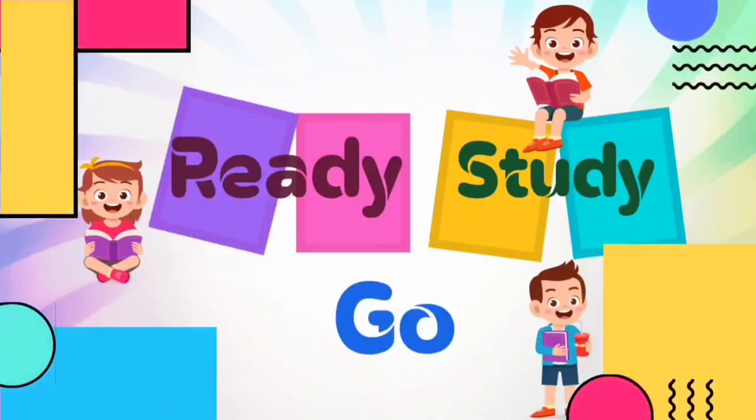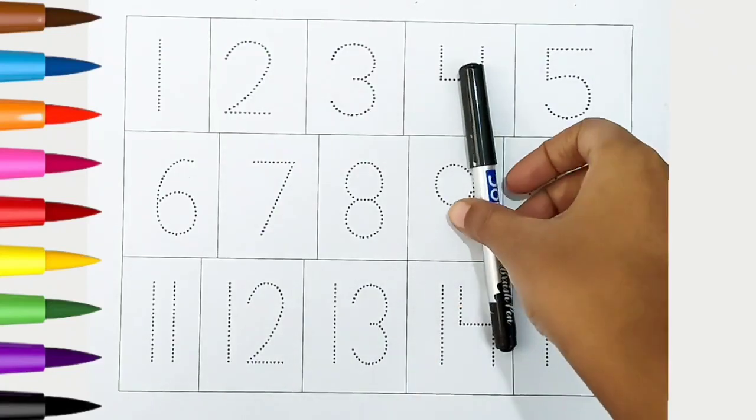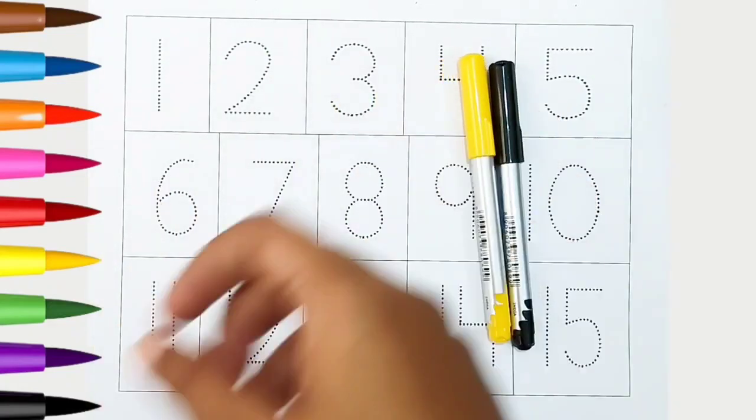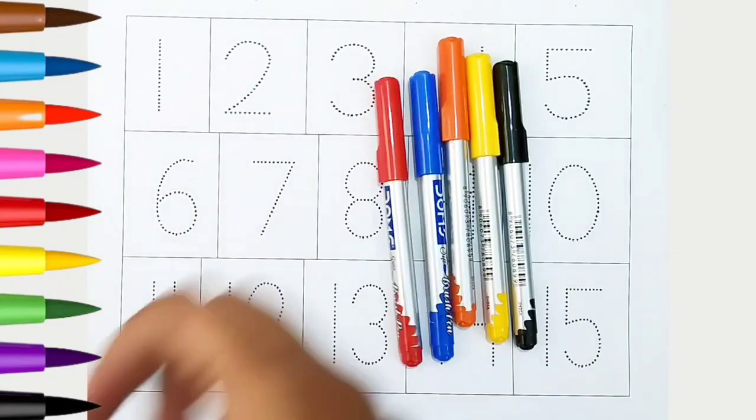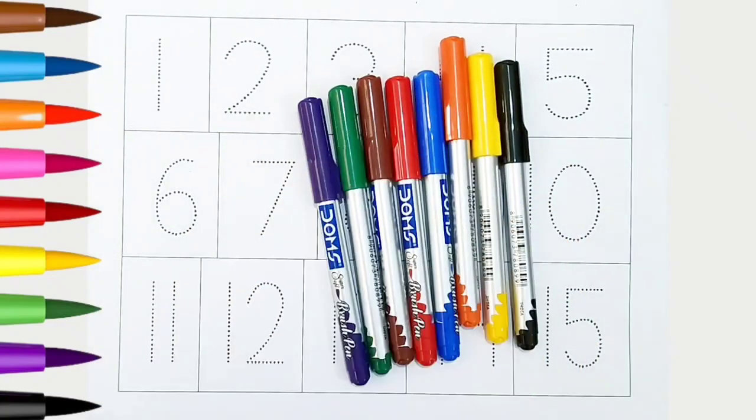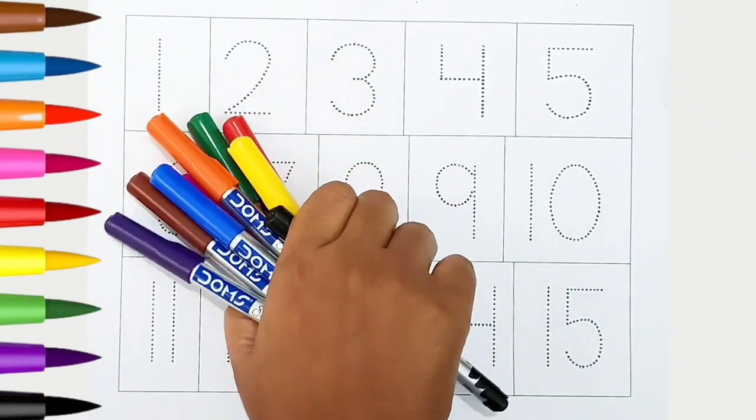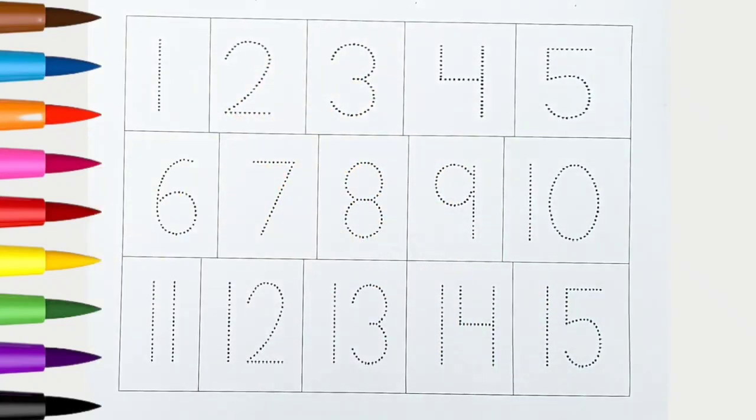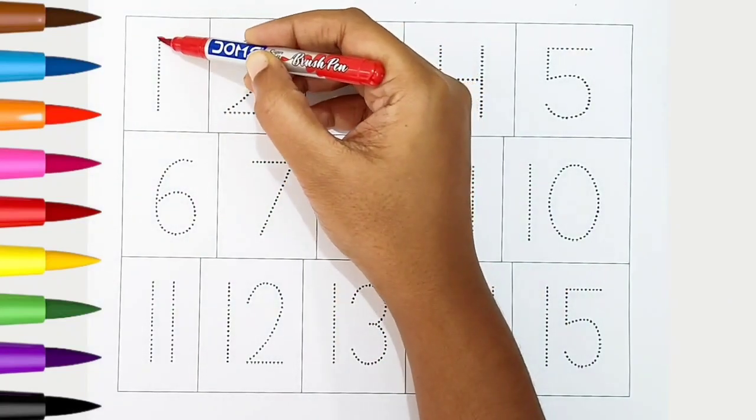Ready, study, go! Hi kids. Black color, yellow color, orange color, blue color, red color, brown color, green color, violet color, pink color. Hi kids, today we can learn the numbers from 1 to 15. Let's begin.